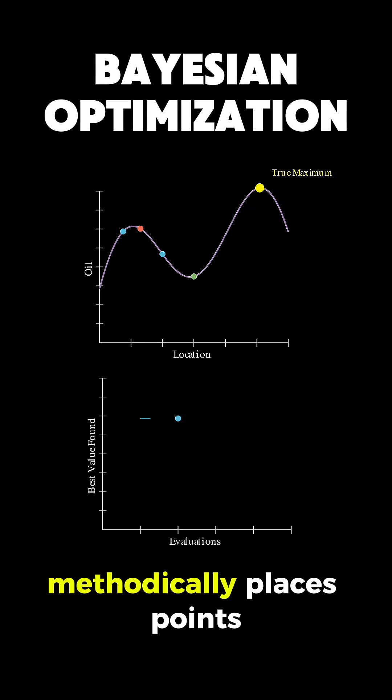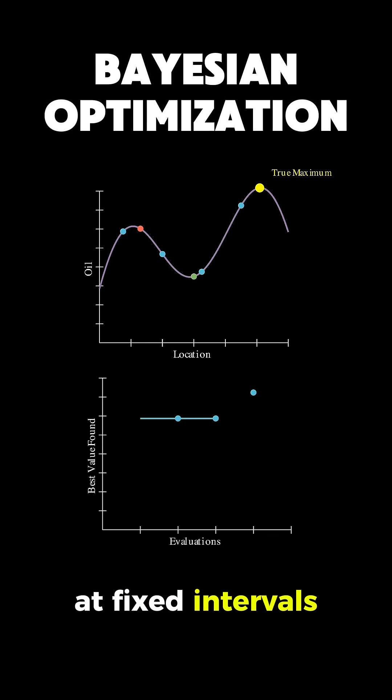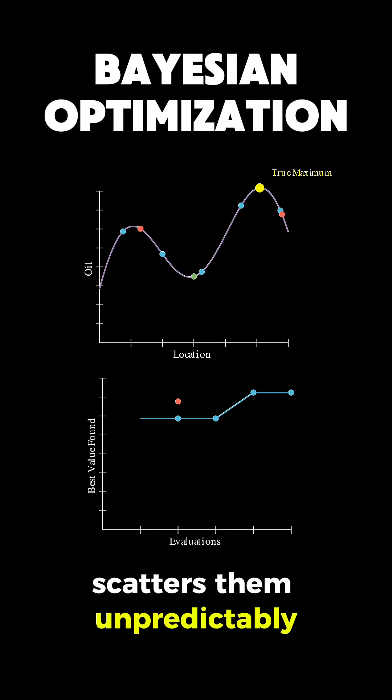Grid search methodically places points at fixed intervals, while random search scatters them unpredictably.